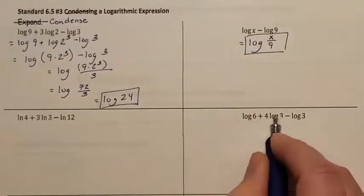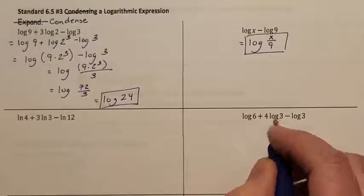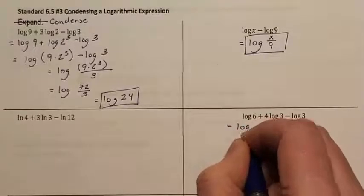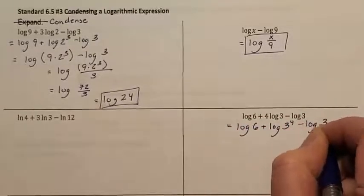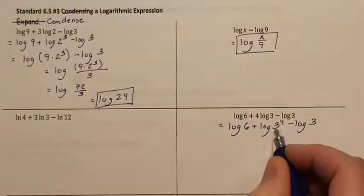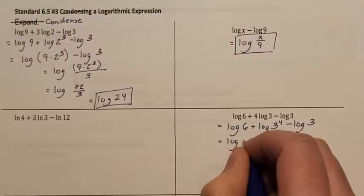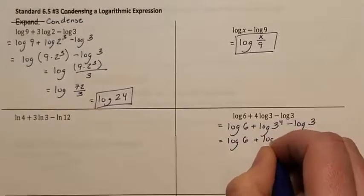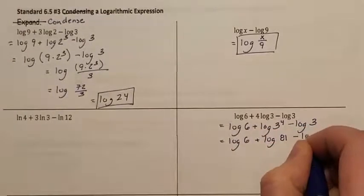Next one. I see the 4 in front of the log. That meant this was an exponent. So we're going to rewrite it as an exponent. Now I want to simplify what is 3 to the fourth power. That is 81. So we're going to rewrite this as log 6 plus log 81 minus log 3.